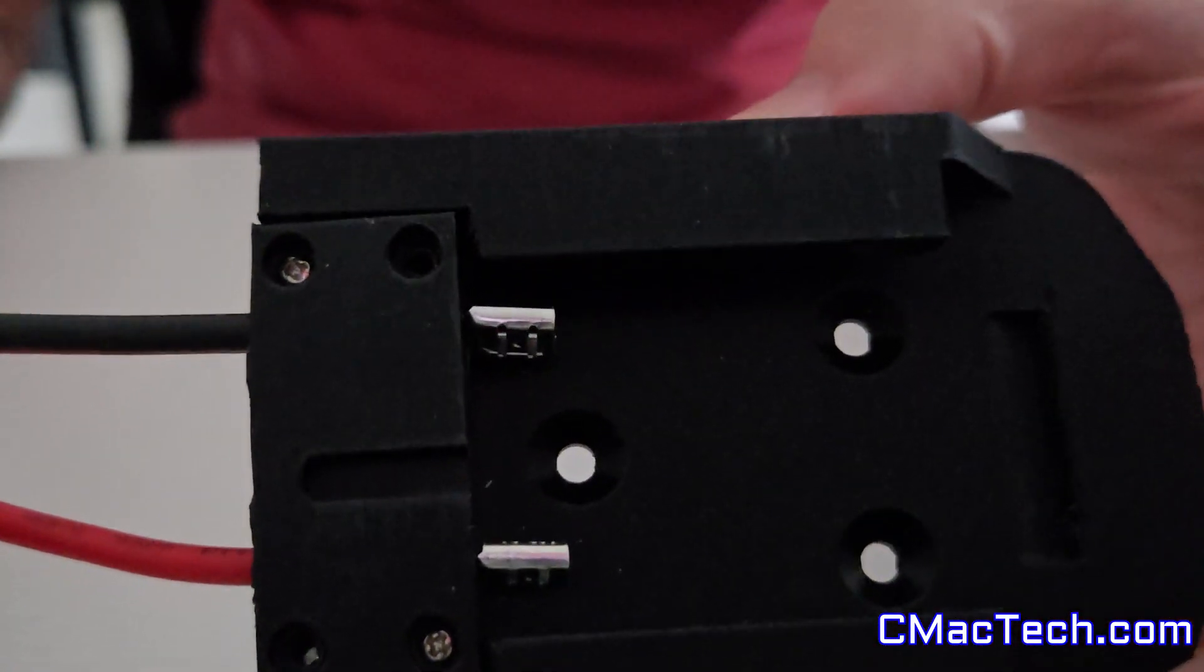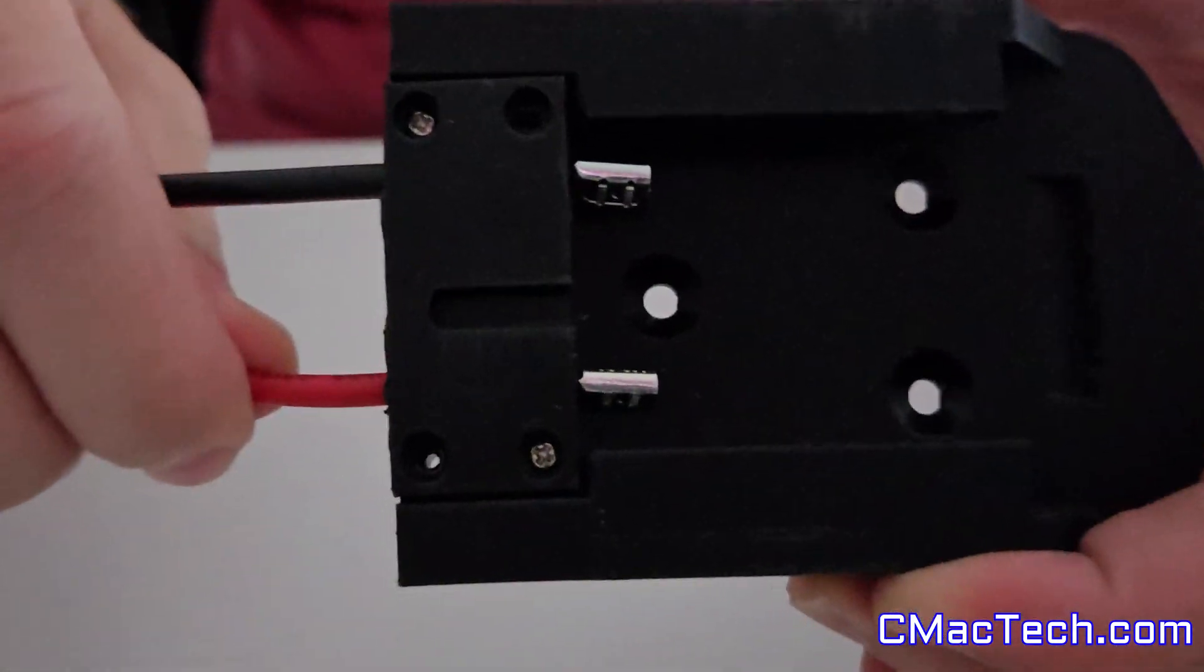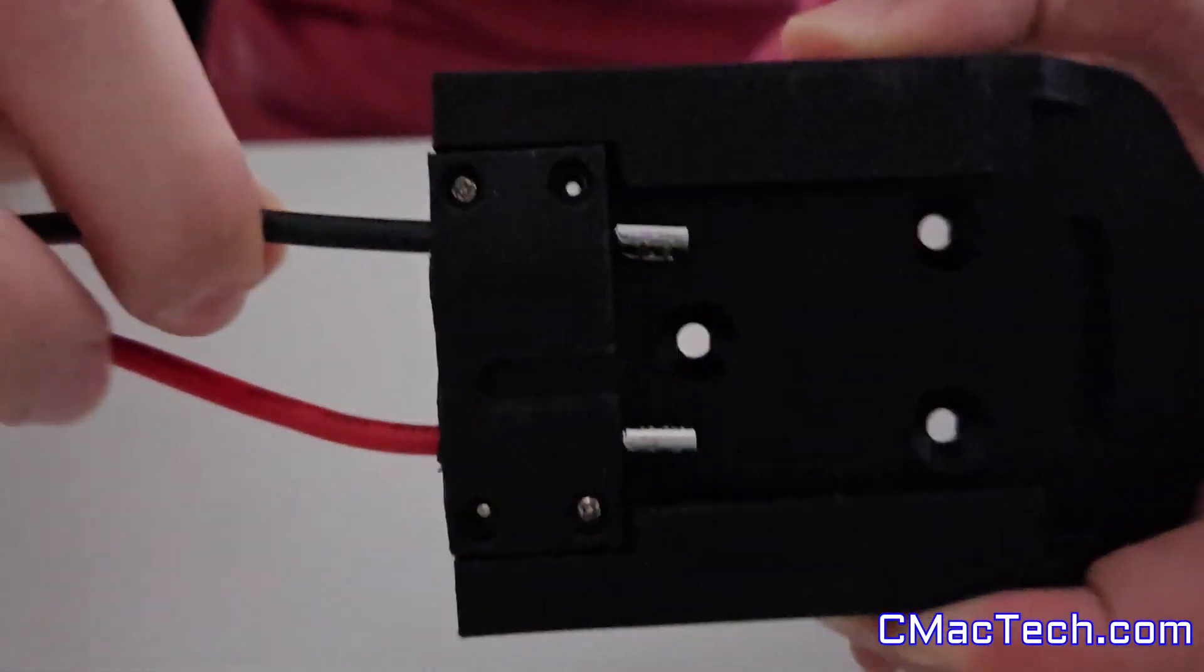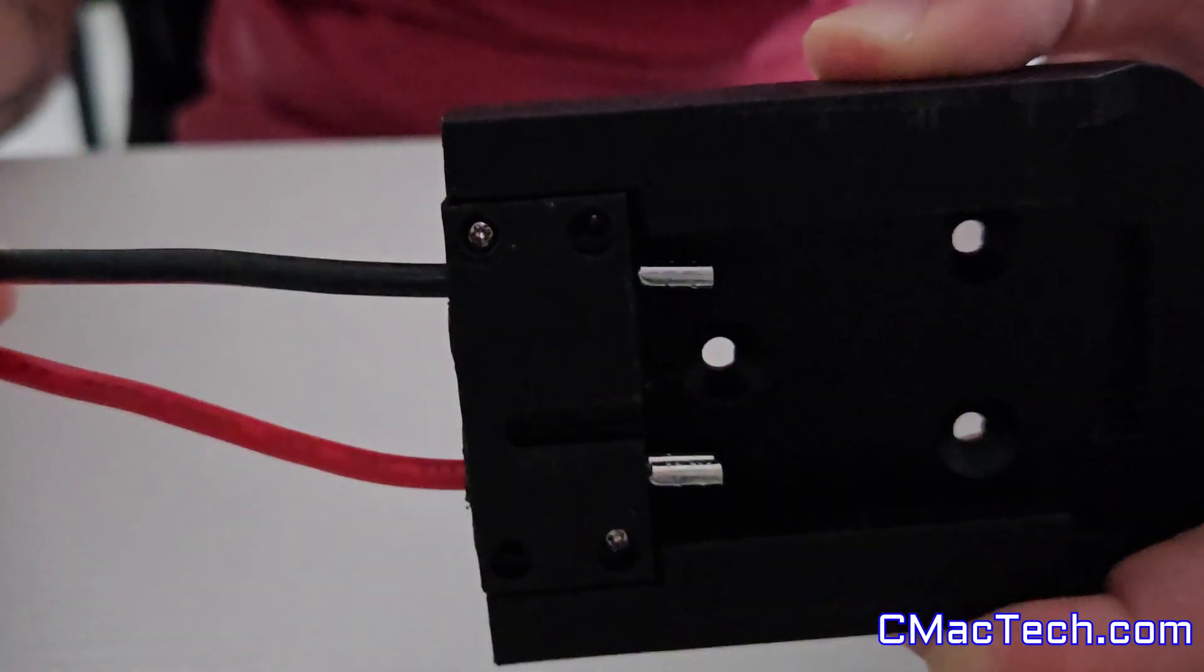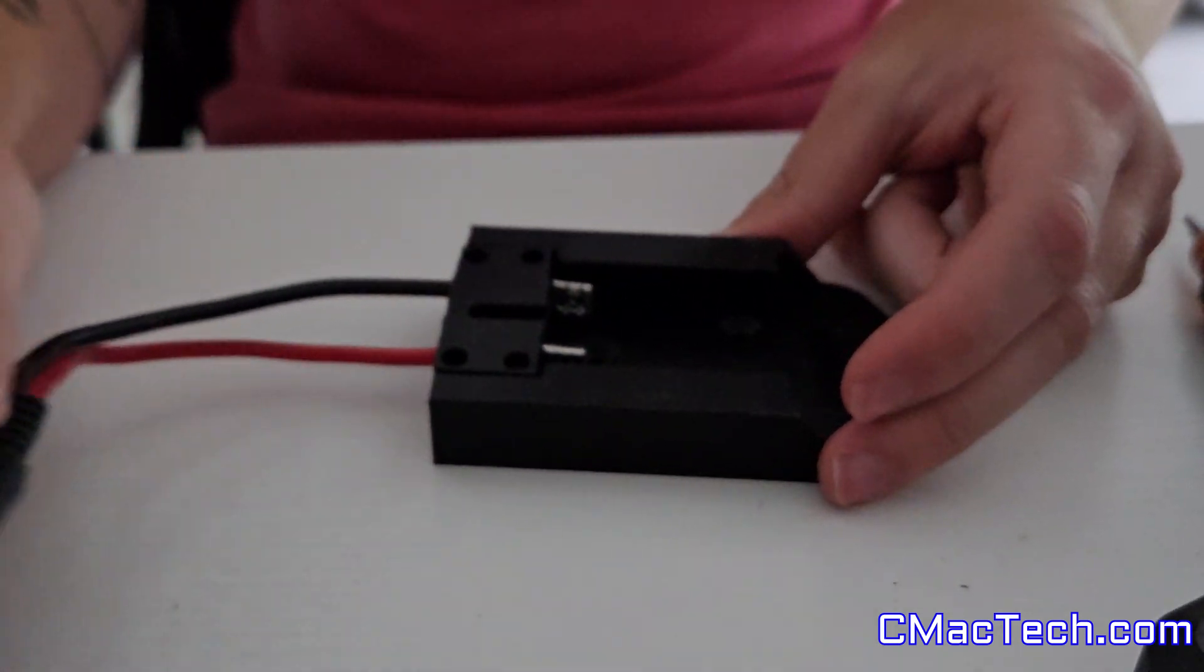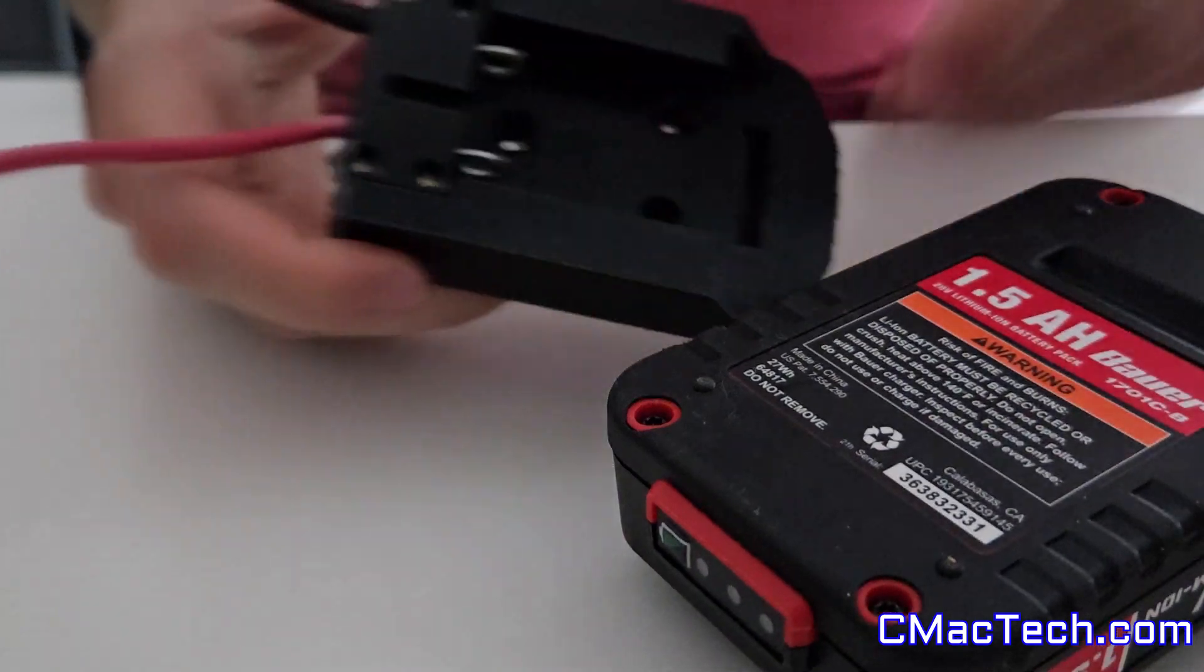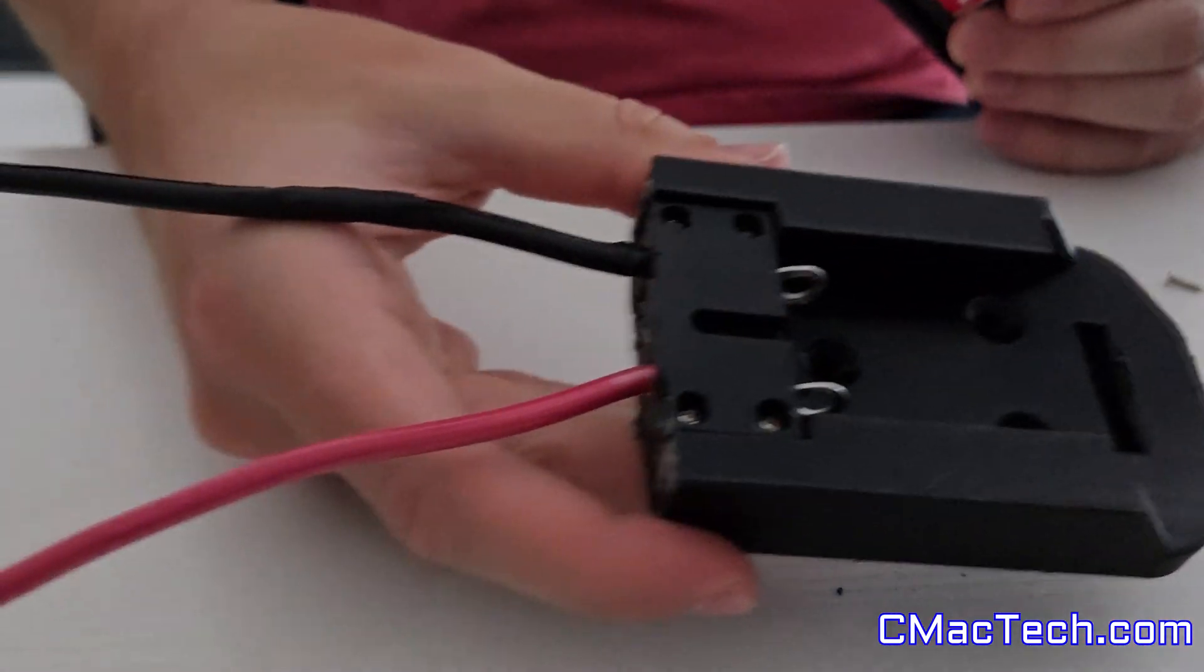Okay, so you want to make sure everything is nice and snug and in place. Give it a nice little pull, and if everything is nice and snug, that's pretty much it. You'll want to double confirm that the right wires on the right side so reverse polarity doesn't happen. We don't want that to happen.